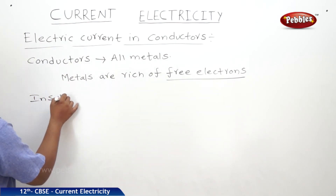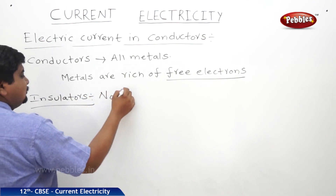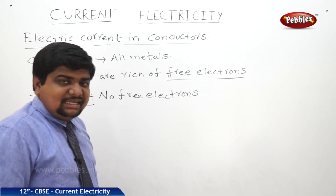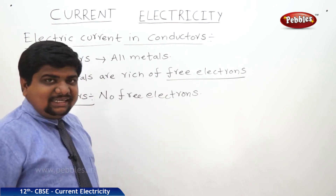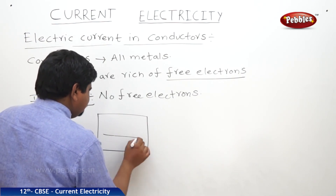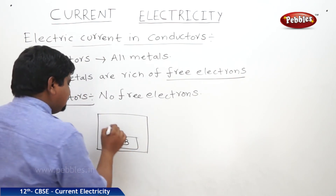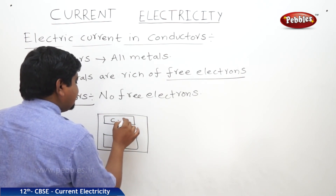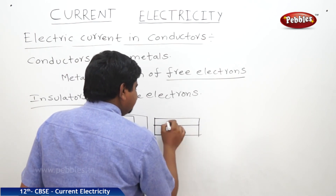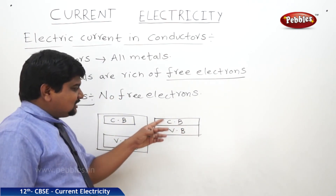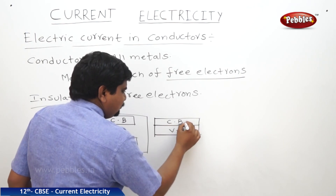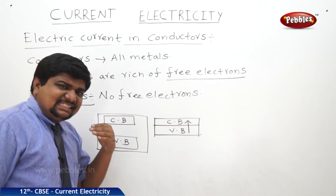To understand this concept, we need to know about the band theory of solids. The valency electrons gather in a valency band. The conduction band is filled with conducting electrons. If the conduction band and valency band are overlapped, those materials are called conductors — there is no gap between them. A small amount of energy is sufficient to jump an electron from the valency band to the conduction band, which is why conductors can easily flow electric current.